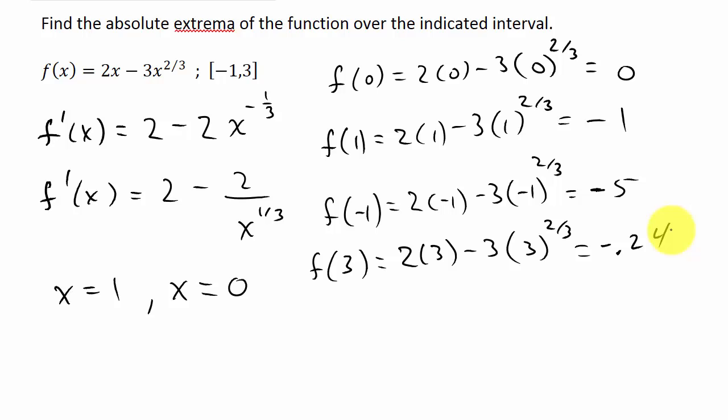Alright, so remember the largest value is the max, the absolute max. The smallest value is the absolute minimum. And so you can see here this would be our largest value, 0. So that's our absolute max. And this would be our absolute minimum at x equals negative 1. That's our smallest value.